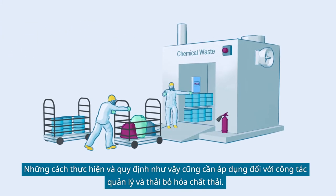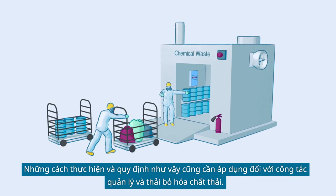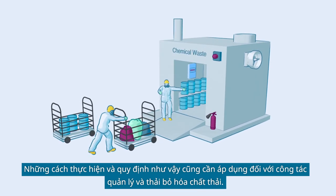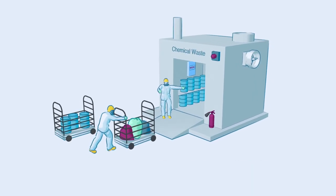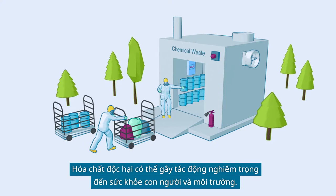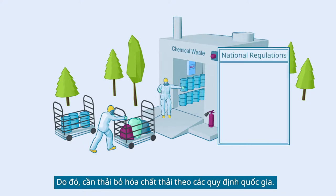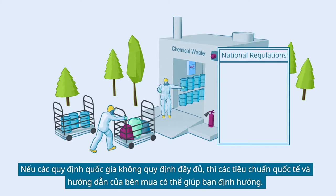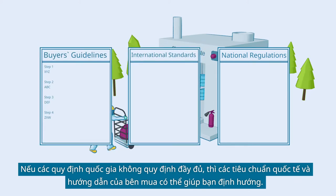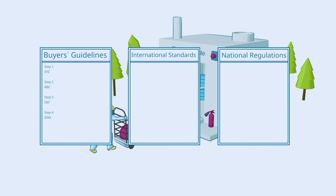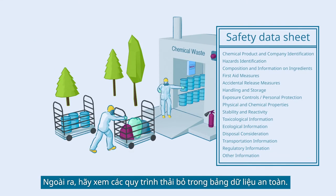Such practices and provisions also include those for the management and disposal of chemical waste. Hazardous chemicals can have a significant impact on human health and the environment. Therefore, chemical waste needs to be disposed according to your national regulations. In the absence of adequate national regulations, international standards and buyer's guidelines can provide guidance. Also, check the disposal procedures from the safety data sheets.